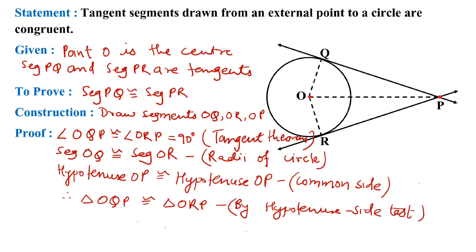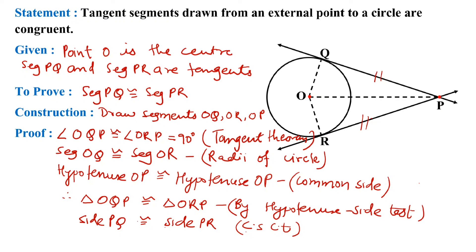We know that if two triangles are congruent, then the remaining corresponding parts will also be congruent. So from the remaining parts we take side PQ and side PR: side PQ is congruent to side PR, because they are corresponding sides of congruent triangles (CSCT). This way we can say that tangent segments drawn from an external point of a given circle are always congruent.